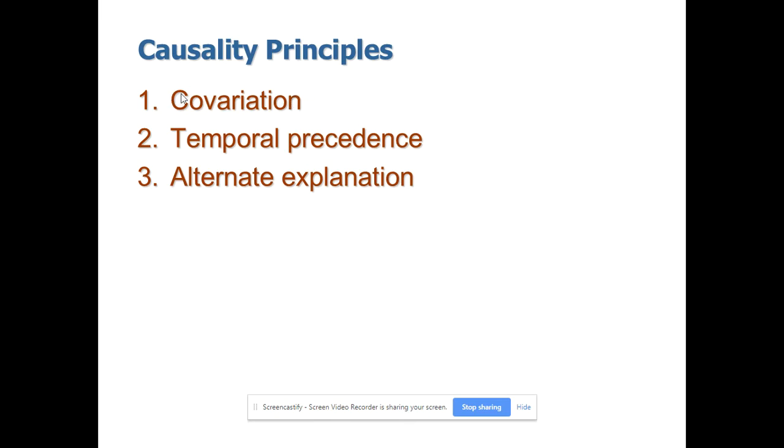Covariation can be established when you have two sets of data for x as well as y. Simply by establishing the correlation or regression relationship, you will be able to say something about the relationship between two constructs. But in the case of temporal precedence, we may not be able to do that.